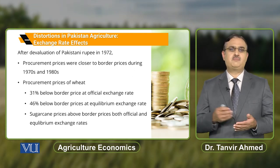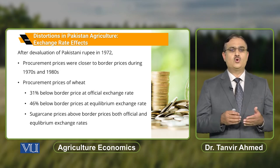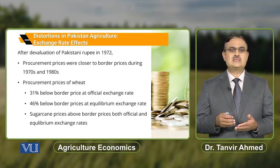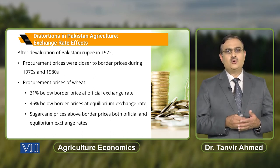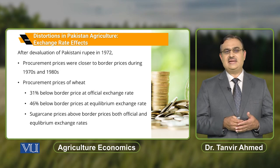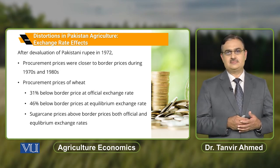But after the devaluation of the Pakistani rupee in 1972, procurement prices were closer to the border price during the 1970s and 1980s.